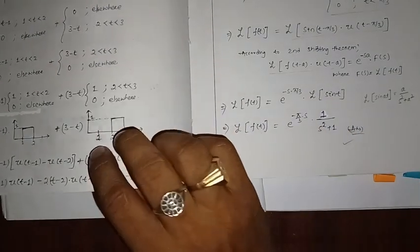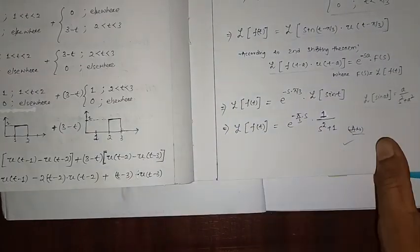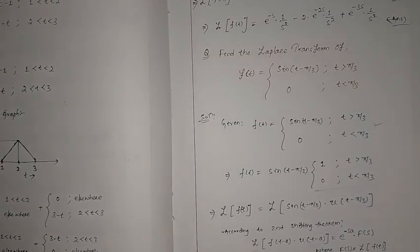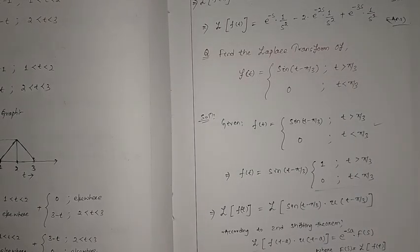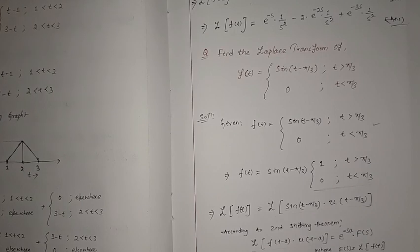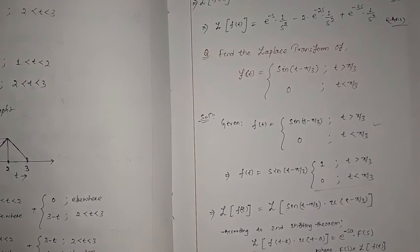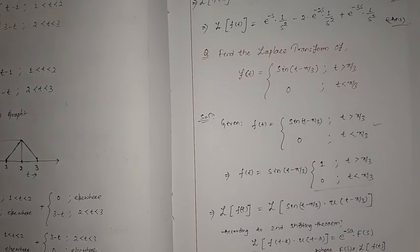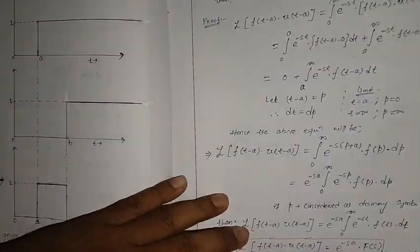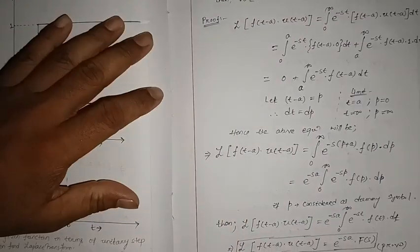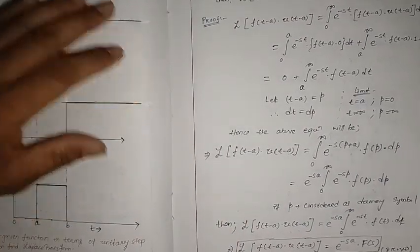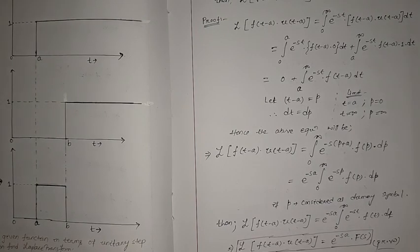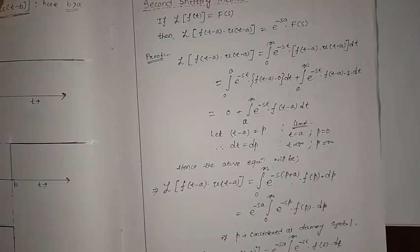So the answer is e to the power minus (πs/3) divided by (s² plus 1). Here we stop today's discussion. In the next class we are going to solve a few more numericals based on both the Second Shifting Theorem and the unit step function. Thank you so much for watching this video.